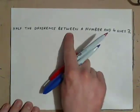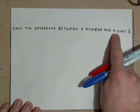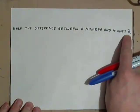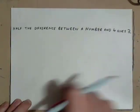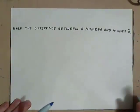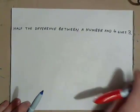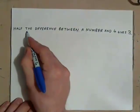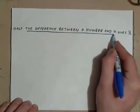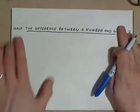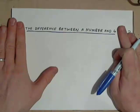Half the difference between a number and 4 gives 3. Now, remember that says half the difference, half the difference between a number and 4. First, let's write down, what would this be? The difference between a number and 4. Just do that. Forget about this part. Write down the difference between a number and 4.